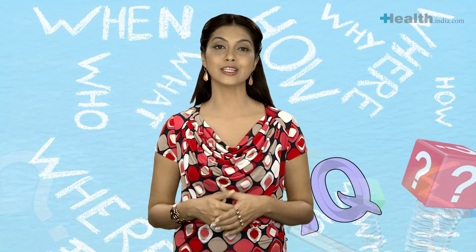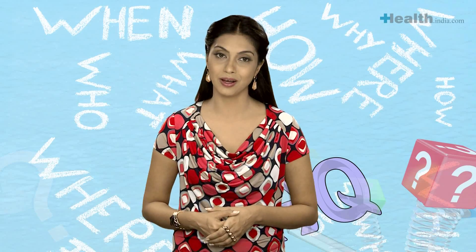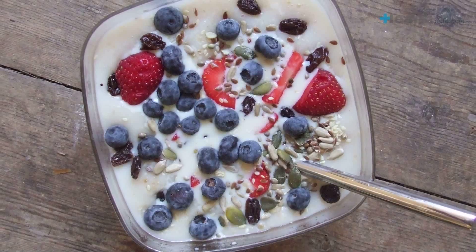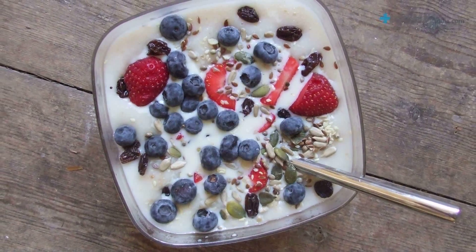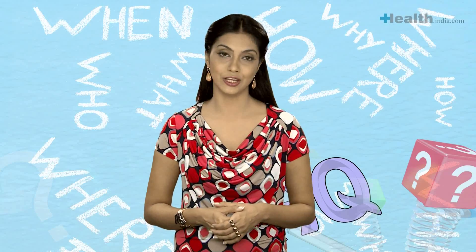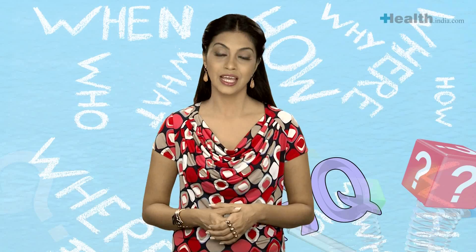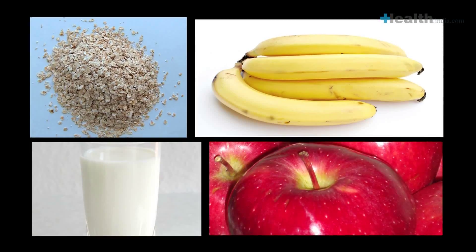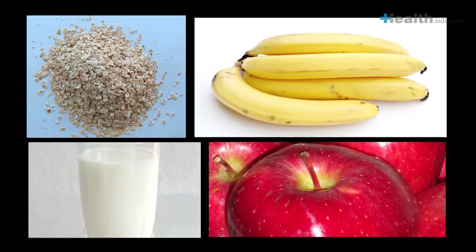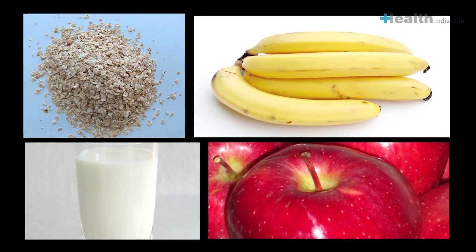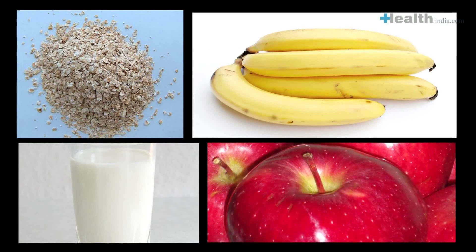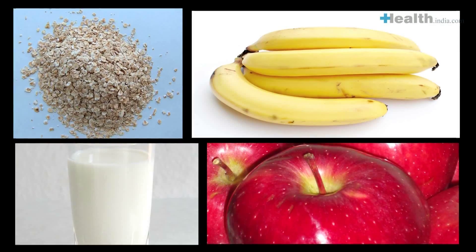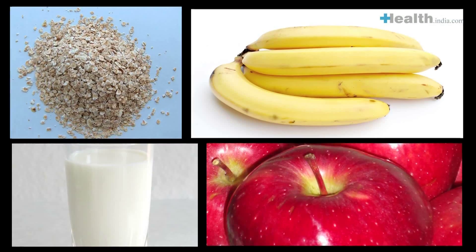Oats: being high in soluble fiber, oats reduce the absorption of cholesterol — both total and LDL — in your blood. Eating one and a half cups of cooked oats with milk and bananas or apples gives you your daily requirement of soluble fiber.